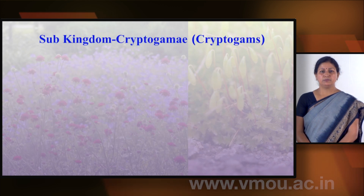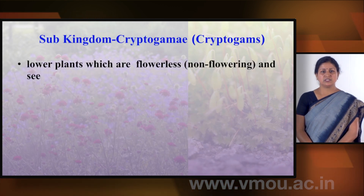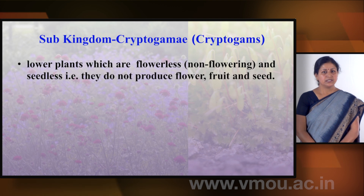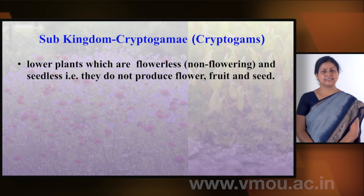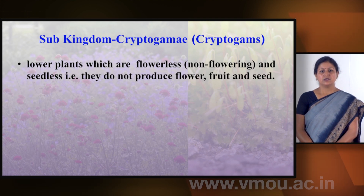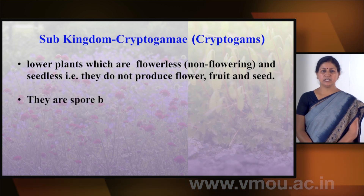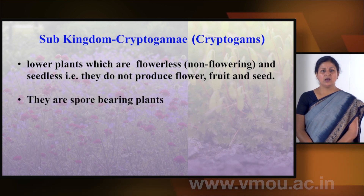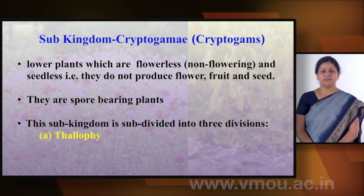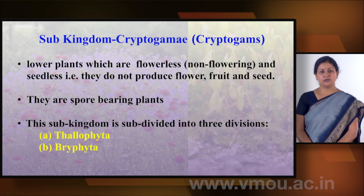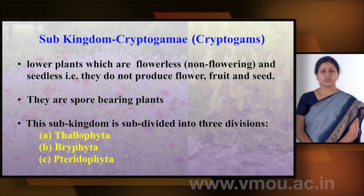Sub-kingdom Cryptogamy includes lower plants which are non-flowering. They are seedless — they do not produce flowers, fruits, or seeds. They reproduce by spores. This sub-kingdom is divided into three divisions: Thallophyta, Bryophyta, and Pteridophyta.